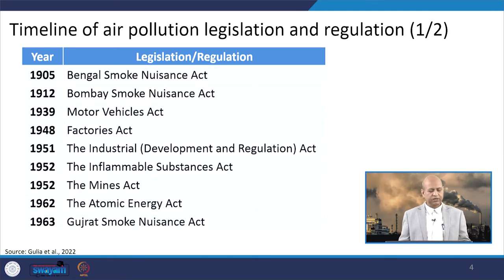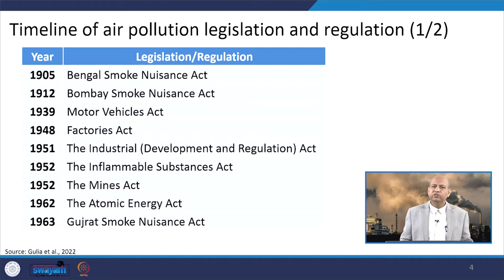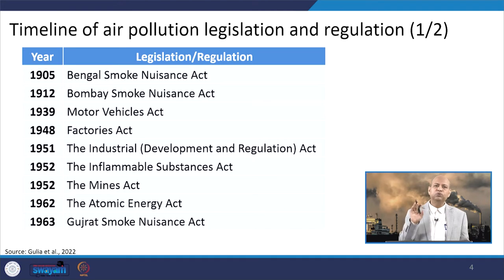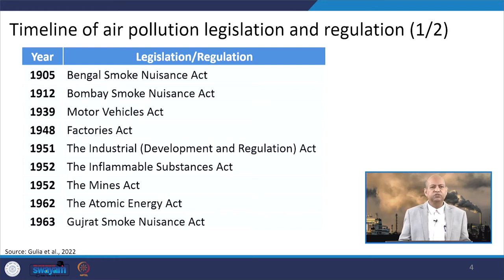Here is the timeline in brief. In 1905, the Bengal Smoke Nuisance Act was enacted. Then in 1912, the Bombay Smoke Nuisance Act was established. In 1939, the Motor Vehicles Act was introduced and the Factories Act was enacted in 1948. In 1951, the Industrial Development and Regulation Act was enacted. We are looking only at those acts which directly or indirectly influence air quality.